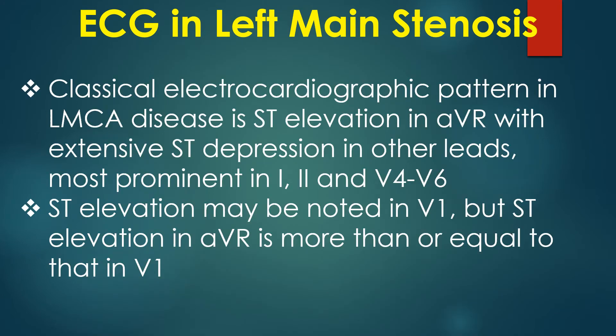The classical electrocardiographic pattern in left main coronary artery disease is ST elevation in AVR with extensive ST depression in other leads, most prominent in leads 1, 2, and V4 to V6. ST elevation may also be noted in V1, but ST elevation in AVR is greater than or equal to that in V1.